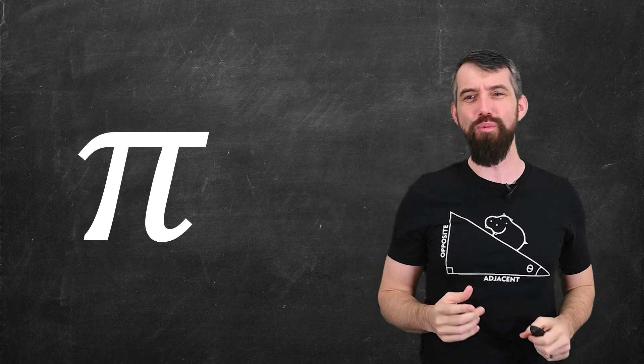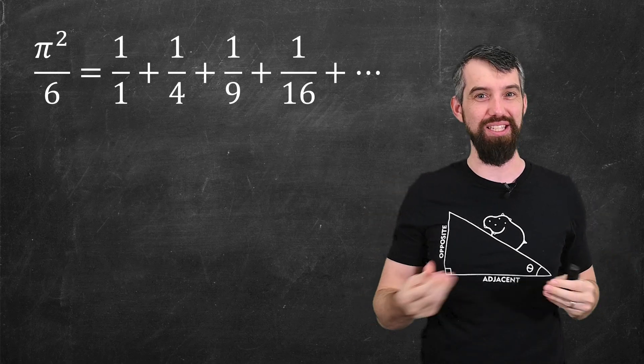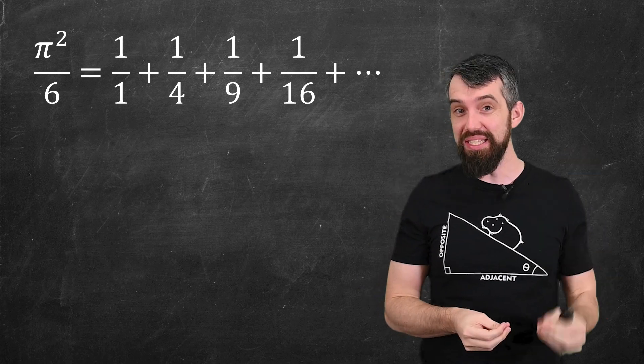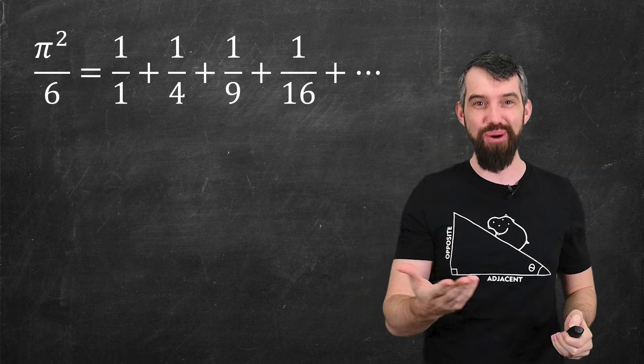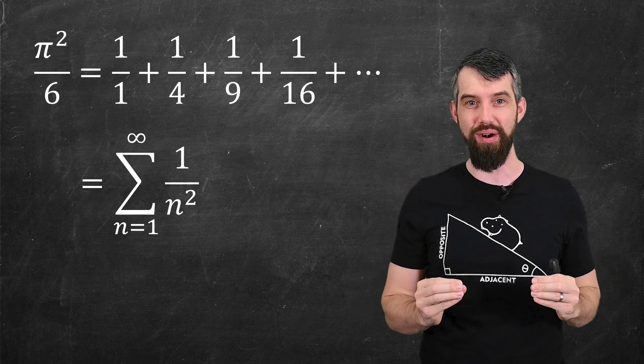Specifically, I want to talk about a cool formula for pi. It's the formula that π²/6 is 1 over 1 plus 1/4 plus 1/9 plus 1/16, and in general, it can be written as the sum of terms of the form 1/n².